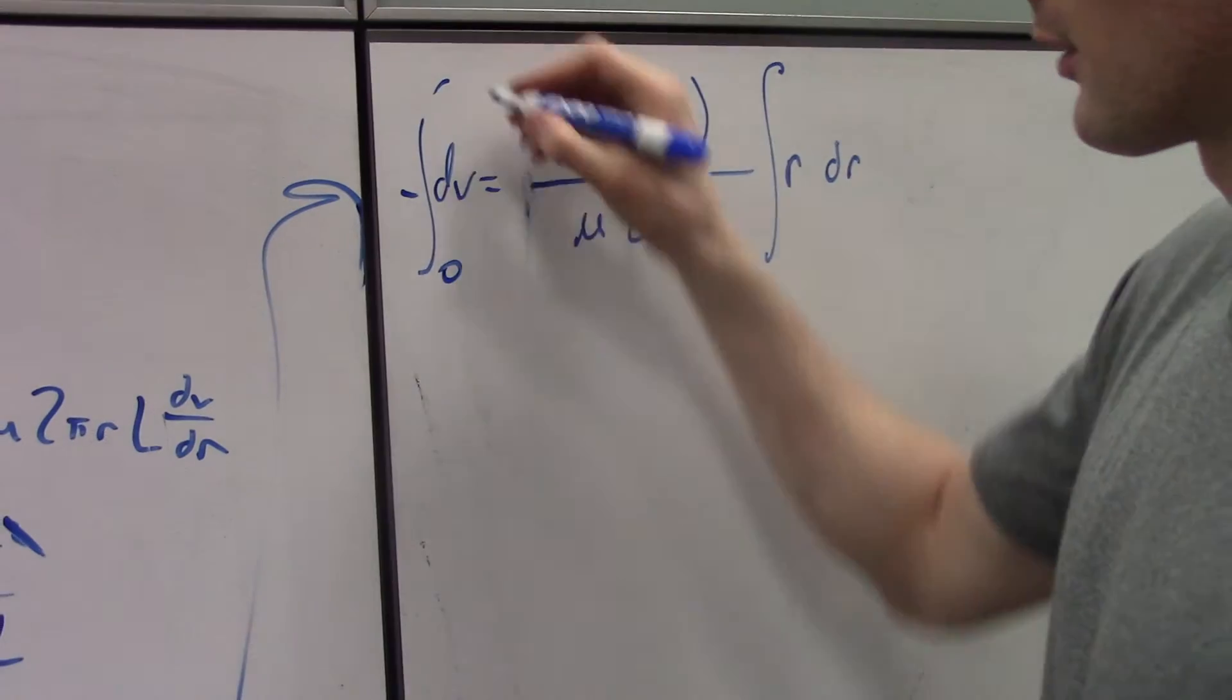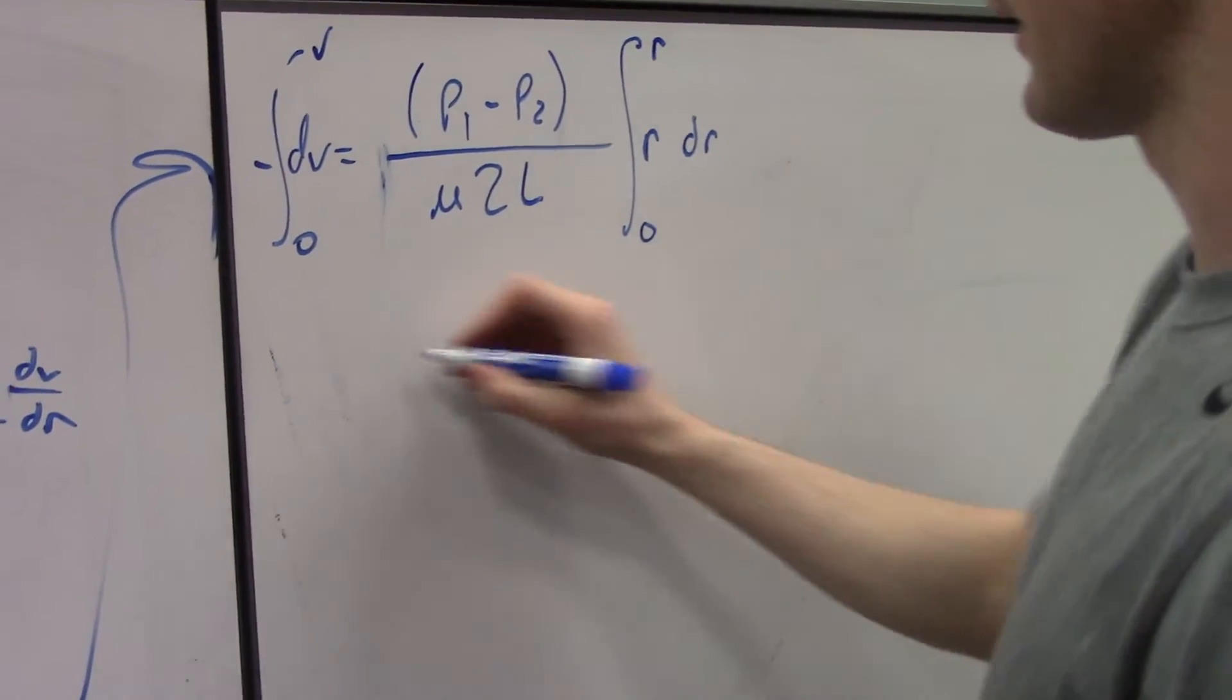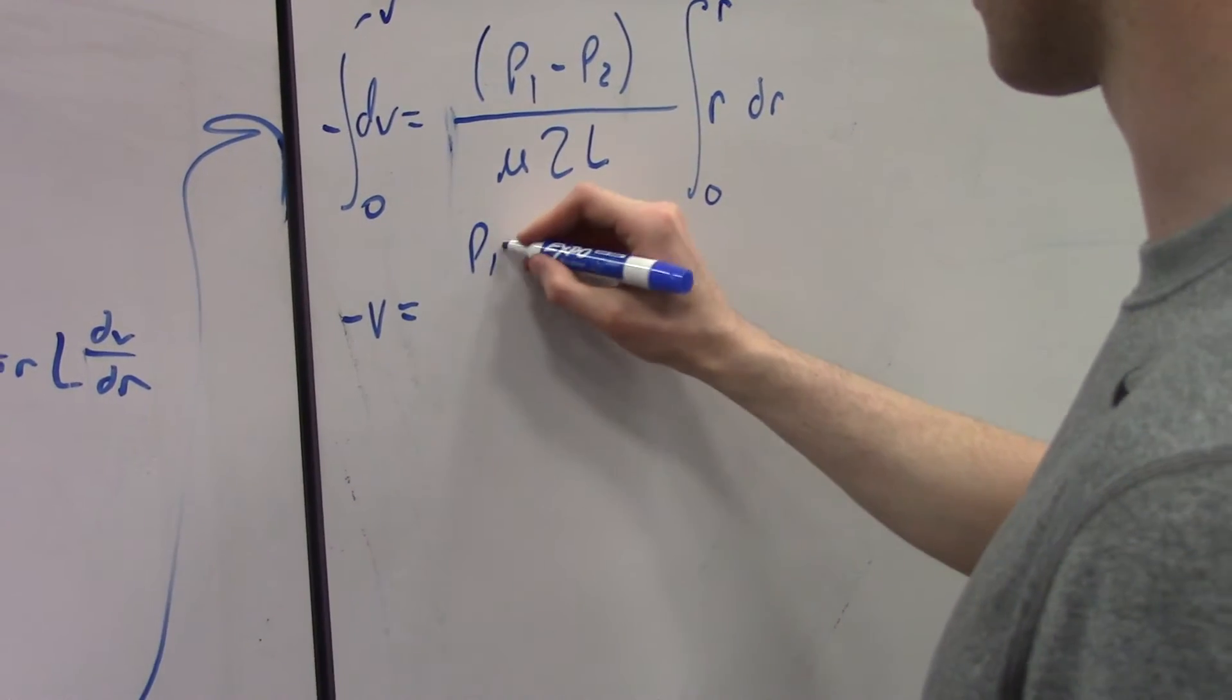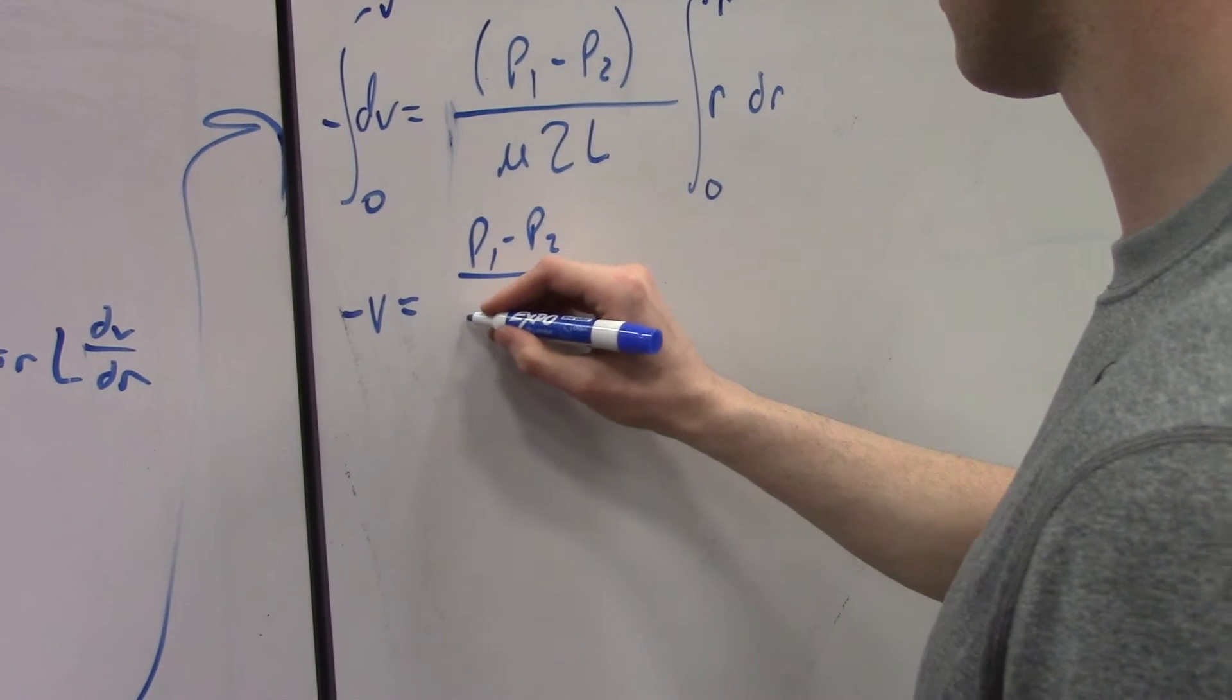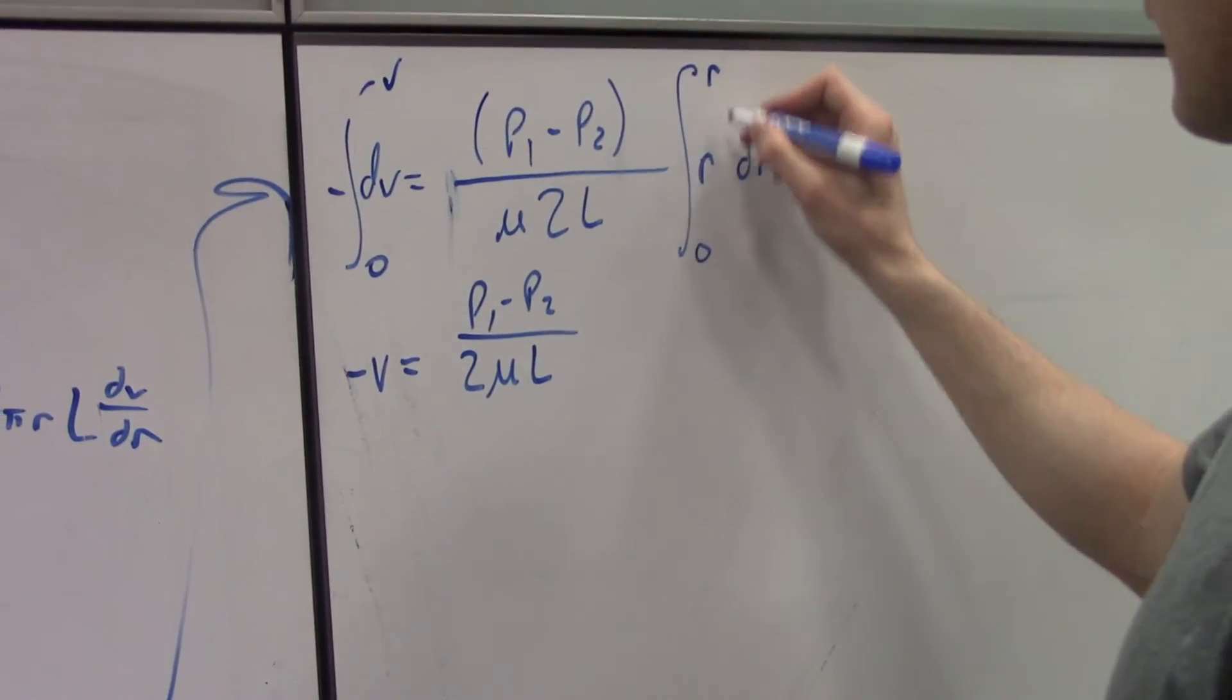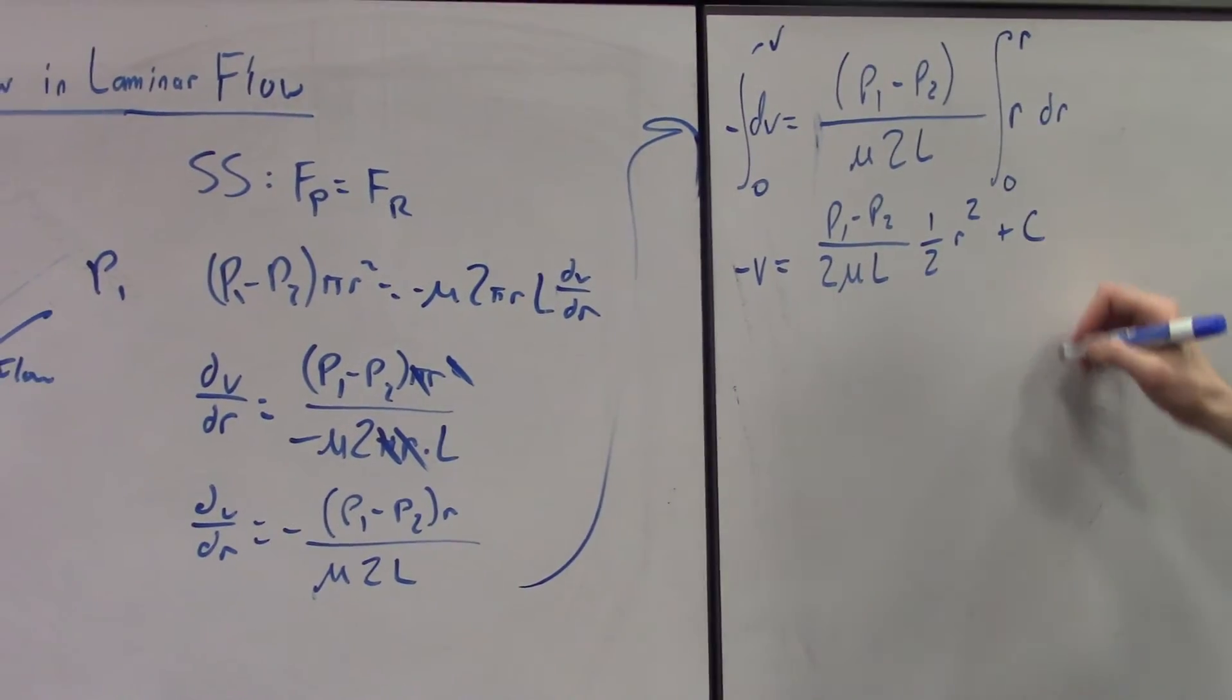So we're going to integrate from 0 to velocity and then 0 to our little r. And that's going to be negative velocity equals P1 minus P2 over 2 viscosity L, and then one half R squared plus C.